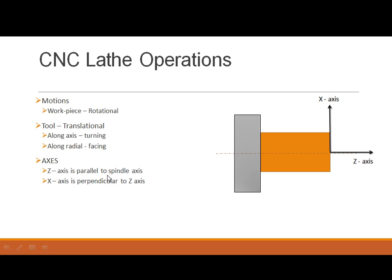The Z axis is parallel to the spindle axis and in most cases coincides with it. The X axis is perpendicular to the Z axis and covers the radial dimension of the workpiece.